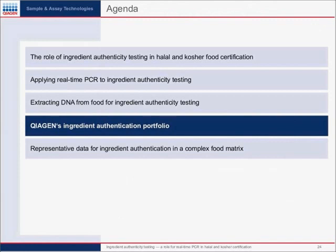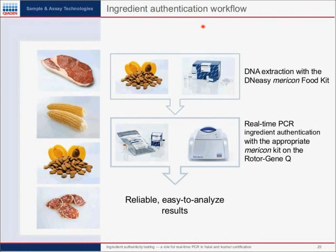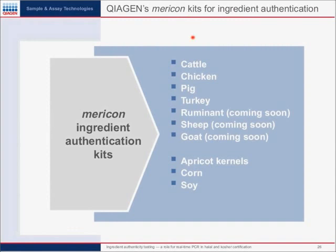What is Qiagen's ingredient authentication portfolio? The workflow involves DNA extraction with the DNeasy Mericon food kit, followed by real-time PCR for ingredient authentication with the appropriate Mericon kit, run on the Rotor-Gene Q instrument, providing reliable, easy-to-analyze results. The Mericon kits for ingredient authentication currently available include: cattle, chicken, pig, and turkey. Coming soon — in about two months — are kits for sheep and goat, which will be very useful for testing animal or cattle feed. For plants, we have apricot kernels, corn, and soy available.